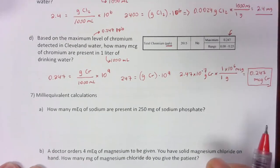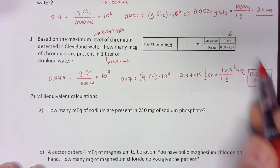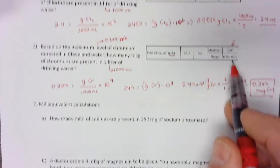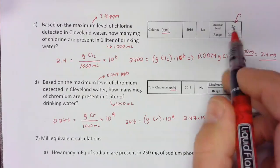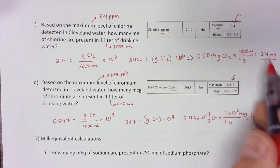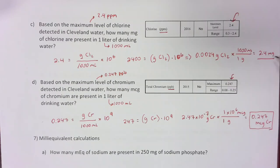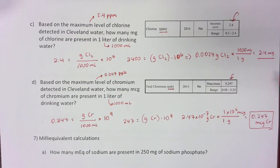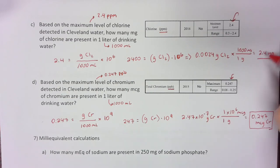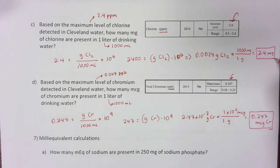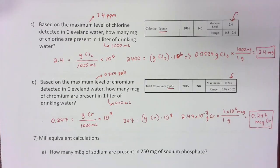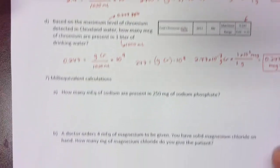Note that the numerical values here happen to be the same — 0.247 ppb and 0.247 micrograms — but that's just because of the units chosen. It won't necessarily always work out that way, so keep that in mind when solving these problems.